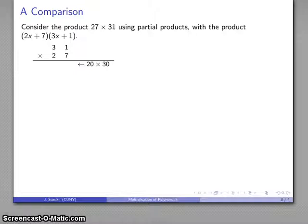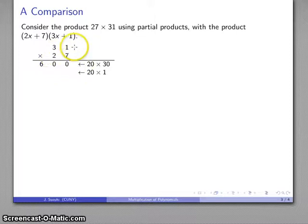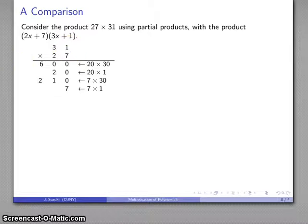If I apply the partial products method, what I'm actually finding here is the product of 27, 30 and 1. That's 20 times 30, 20 times 1, 7 times 30, and 7 times 1. Those are my partial products, and my product is going to be the sum of all those individual terms.